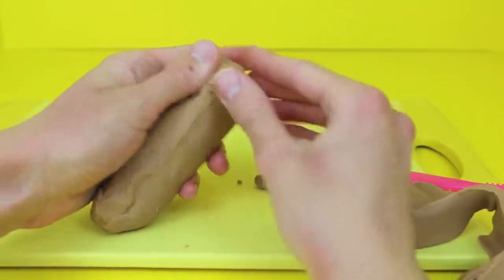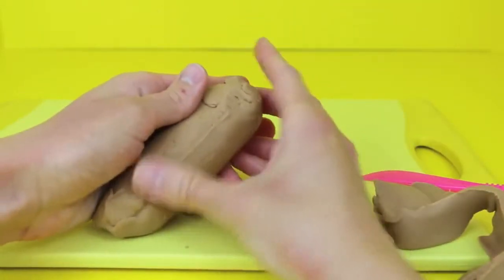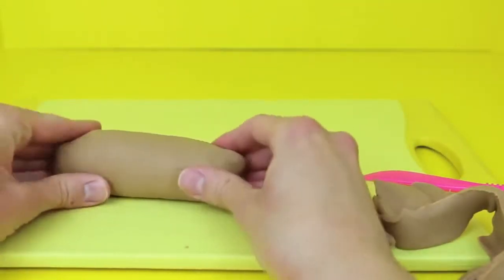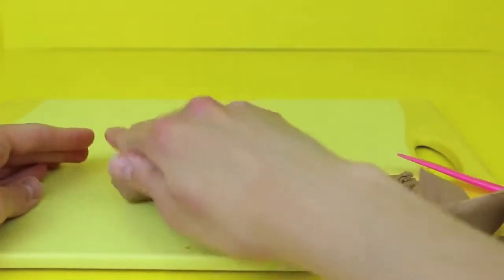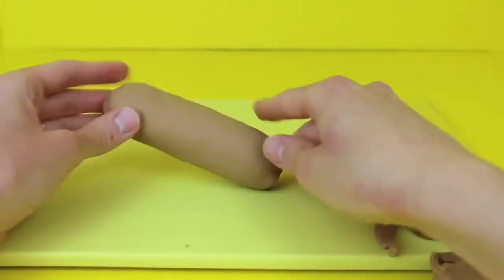At the end of the corn dog and also at the seam here just press the Play-Doh just to make it nice and smooth. You can also just kind of roll it on the ends too just like that just to make it a little more round at the ends.